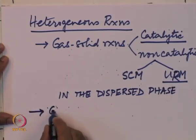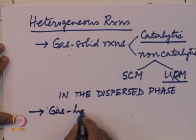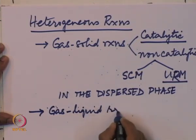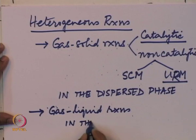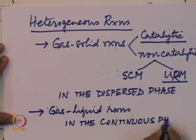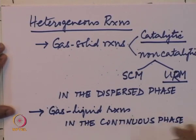By contrast, in gas-liquid reactions, the reaction is in the continuous phase. The normal situation with gas-liquid systems is a gas being bubbled through a column of liquid — either stirred as in a sparged stirred reactor, or stirred by the gas flow itself as in a bubble column. In packed beds as well, both gas and liquid phases may be continuous, but the point is that the reaction is in the continuous liquid phase.